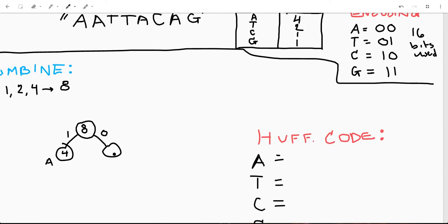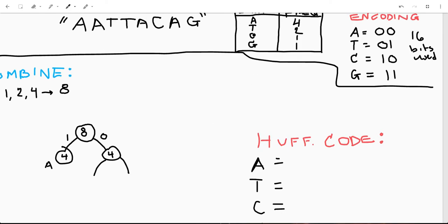Then, eight minus four is four. So we have four character instances left to account for. We're going to put two more branches. And then we're going to say, which of these characters occurs next most frequently?